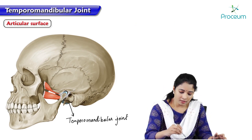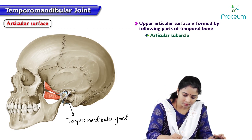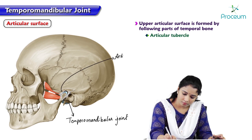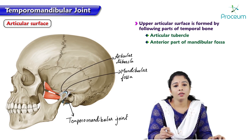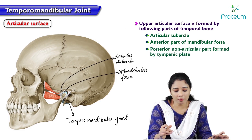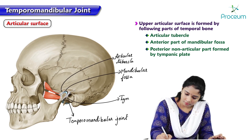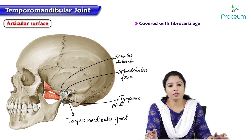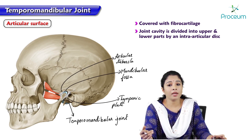Now let's see the articular surfaces. The upper or superior articular surface is formed by the articular tubercle, mandibular fossa, and a non-articular part — the posterior part formed by the tympanic plate. The articular surfaces are covered by a fibrocartilaginous layer, and the joint cavity is divided into upper and lower compartments by an intraarticular disc.